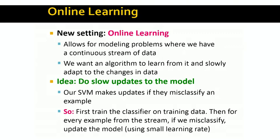The idea is to slowly update the model as the data arrives. In our SVM formulation, whenever a training example comes in, we classify it, then we see whether we classified it correctly or not. If we misclassified it, the gradient value is non-zero and we make a step — this is the formulation of stochastic gradient descent.